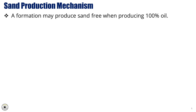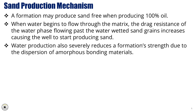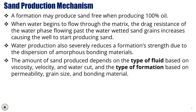As an example, a formation may produce sand-free when producing 100% oil. When water begins to flow through the matrix, the drag resistance of the water phase flowing past the water-wetted sand grains increases, causing the well to start producing sand. Water production also severely reduces formation strength due to the dispersion of amorphous bonding materials. The amount of sand produced depends on the type of fluid — based on viscosity, velocity, and water cut — and the type of formation — based on permeability, grain size, and bonding material.